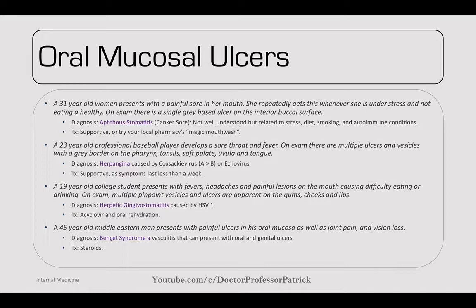Lastly, a 45-year-old Middle Eastern man presents with painful ulcers in his oral mucosa, as well as joint pain and vision loss. The diagnosis is Behcet's syndrome — a vasculitis that can present with oral, genital, and any mucosal ulcers. The vision loss may be related to that, and you treat it with steroids.